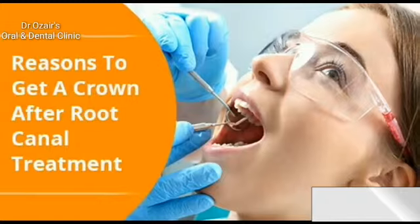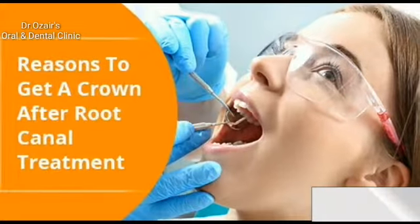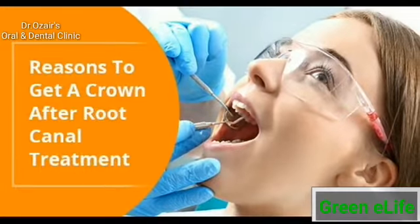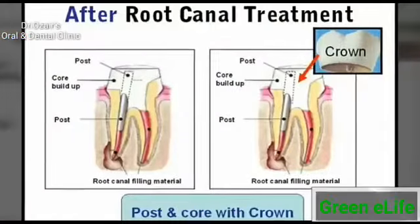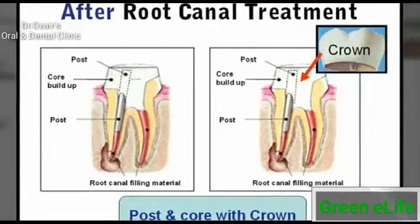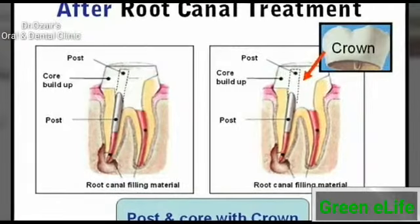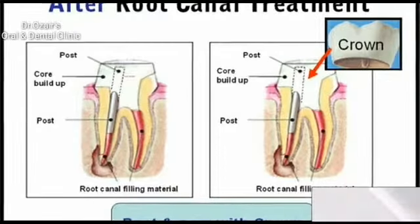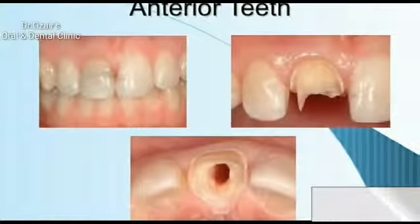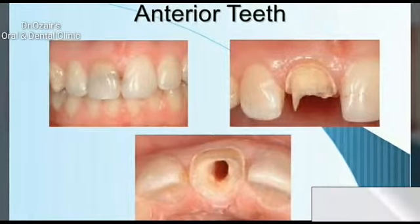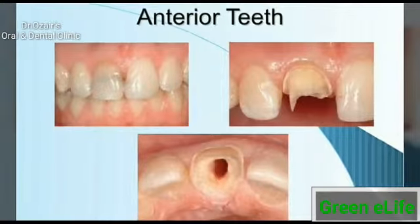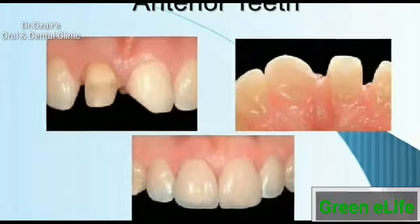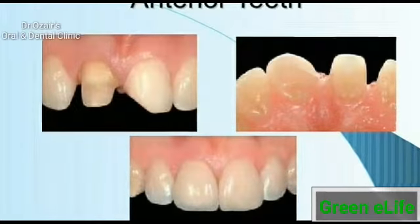After performing root canal work, dental surgeons apply permanent fillings to protect the treated teeth and to strengthen them in the process. For many root canal procedures, however, fitting crowns over the filled teeth is necessary because of the high risk of fracture without the extra protection crowns provide.